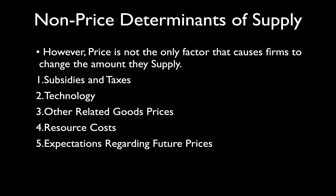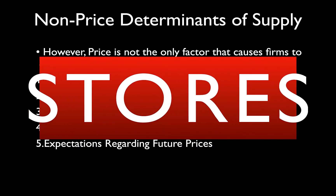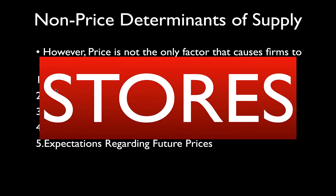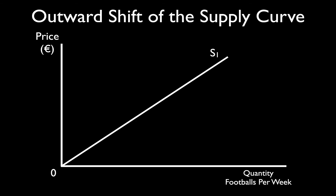Just to be clear: the price today is not changing. Producers expect the price to change in the future, and the question is how do they react to these changes today. Changes in expectations regarding the future price of the good they're selling — even though the price is not changing today — causes a shift in the supply curve.